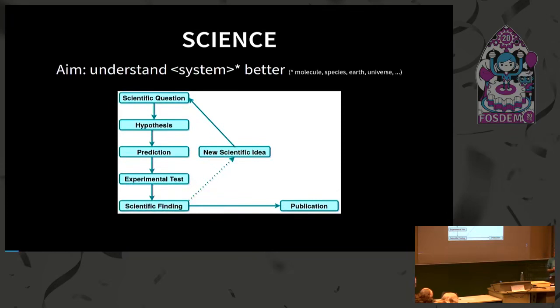To communicate this to other scientists, the method of choice is to write and publish a paper. Usually we're not done there — a new scientific idea pops up and the whole cycle starts from the beginning.